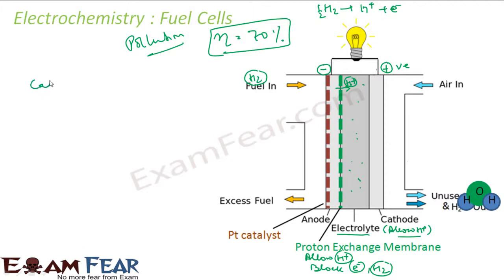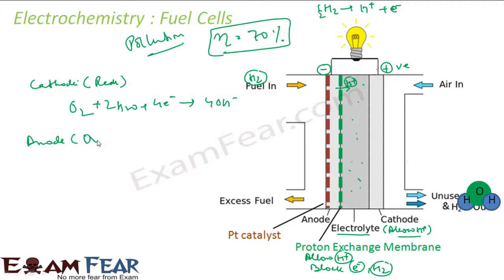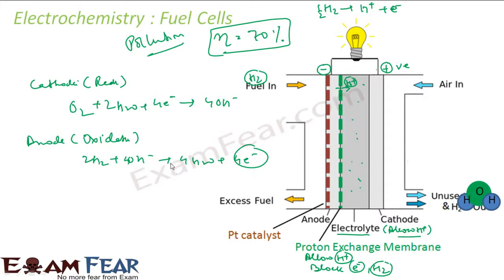If you see the reactions: at the cathode, reduction happens — oxygen reacts with electrons and some water to form 4 OH− ions. At the anode, oxidation happens — hydrogen reacts with OH− ions to form 4 water molecules and 4 electrons. The overall reaction is simply: hydrogen plus oxygen gives H₂O.